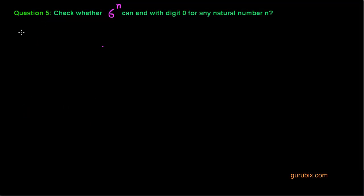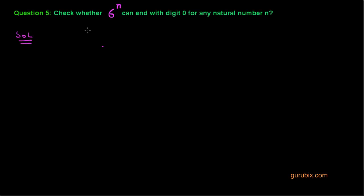This is a very important question to understand because we apply the result of the Fundamental Theorem of Arithmetic here. The question asks us to check whether 6 to the power n can end with the digit 0 — that is, can this number have 0 in the unit digit place for any natural number n?